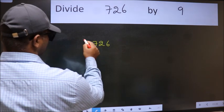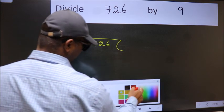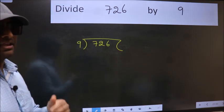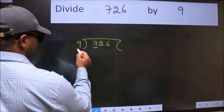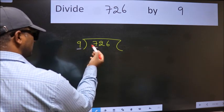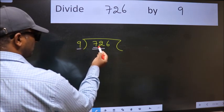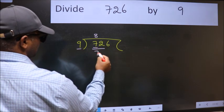726 here, 9 here. This is step 1. Next, here we have 7 and here 9. 7 is smaller than 9, so take two numbers: 72. When do we get 72 in the 9 table? 9 times 8 is 72.